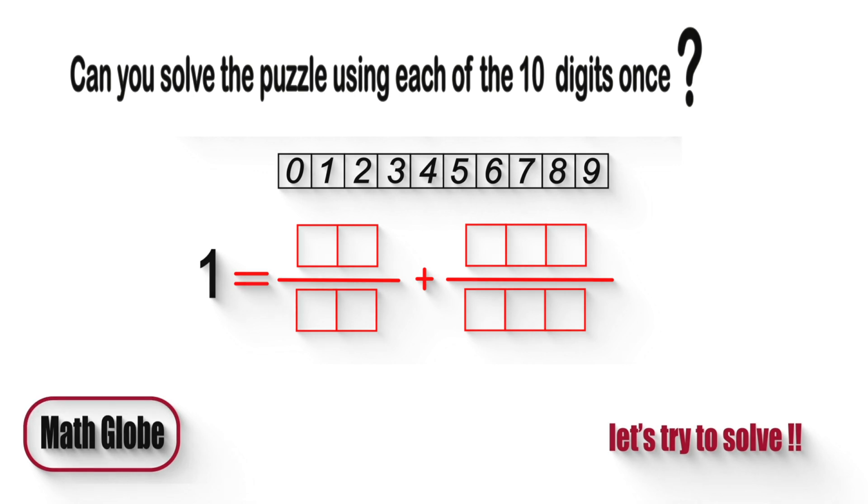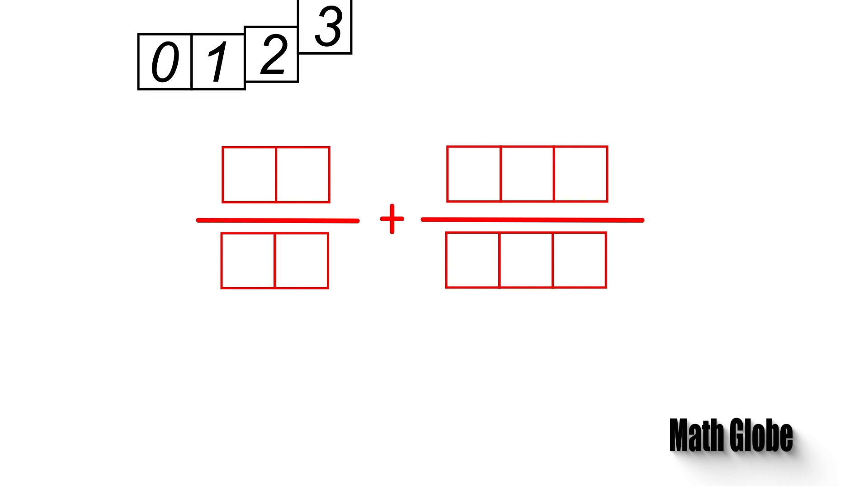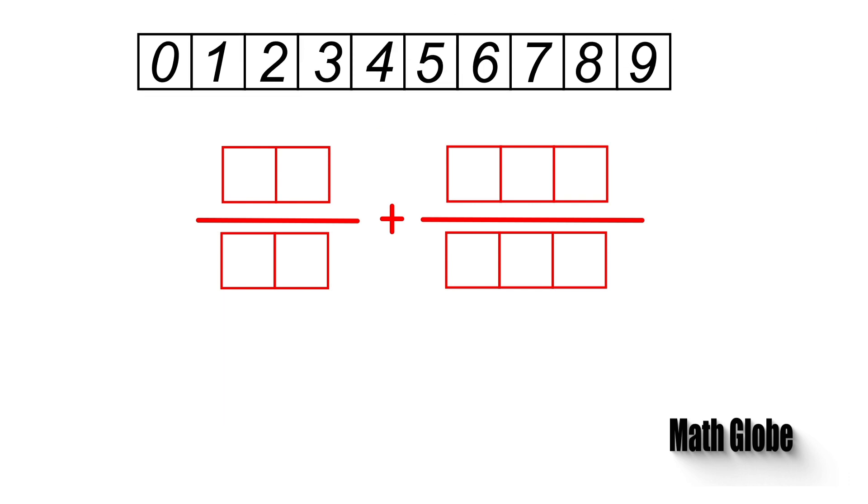Let the solution come. As given in the question, we will fill in given boxes with 10 digits, ranging from 0 to 9. And also, all digits will be used only once, and sum of 2 fractions will be equal to 1.